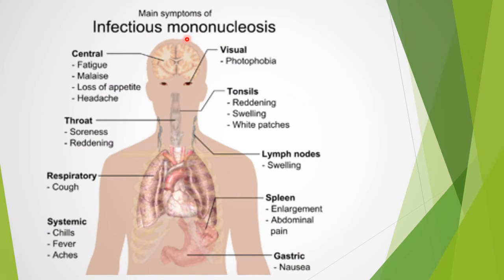The main symptoms of Infectious Mononucleosis include malaise, loss of appetite, headache, and photophobia. There is inflammation of the tonsils leading to reddening, swelling, and white patches, as well as sore throat, cough, and systemic features like chills, fever, and body aches. The spleen is enlarged — splenomegaly — along with abdominal pain and nausea.